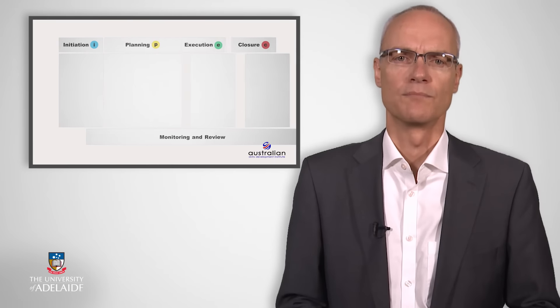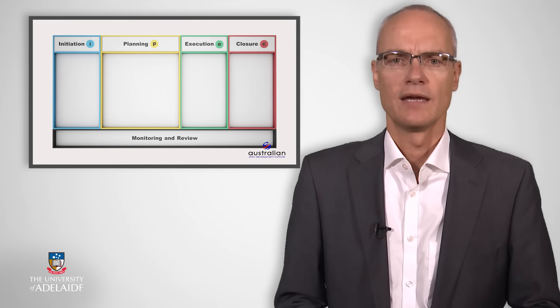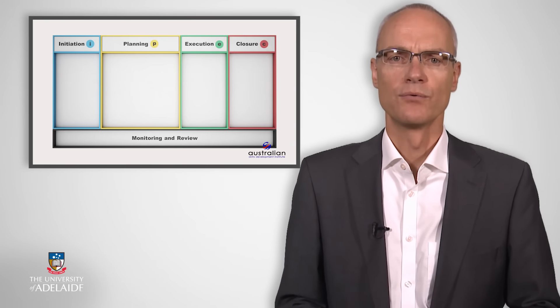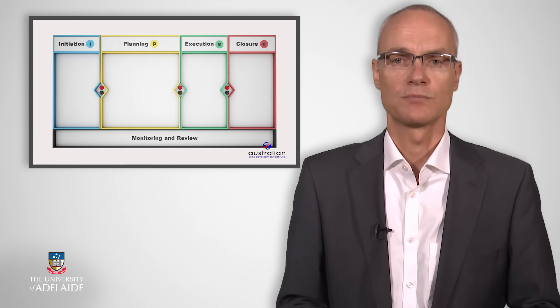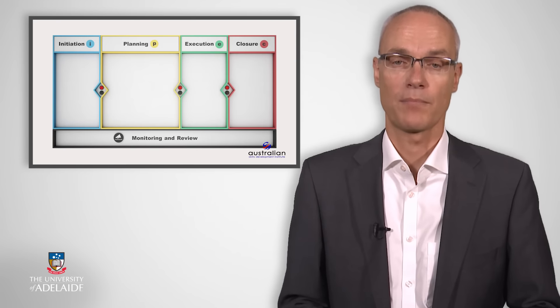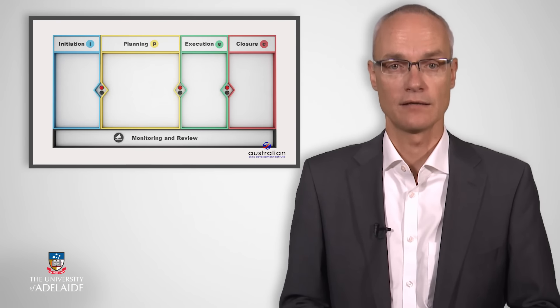We then introduced you to the Project Management Canvas, and we navigated our way through the four phases of the project management life cycle, namely initiation, planning, execution, and closure. You will recall how we emphasized that each phase is an independent component and needs to be integrated as part of the whole journey. But more importantly, we stressed that you need to be able to answer the key questions within each phase before moving to the stage gate and into the next one.